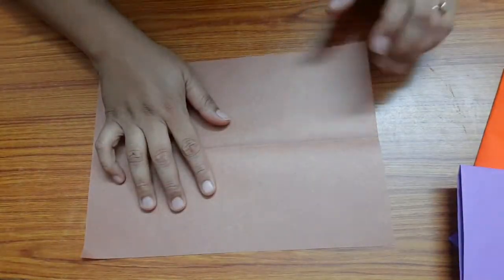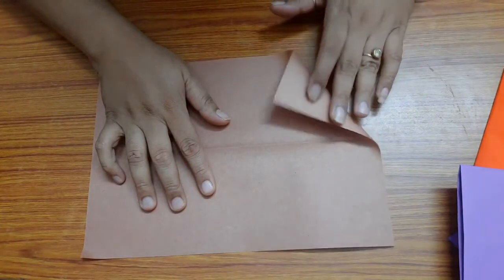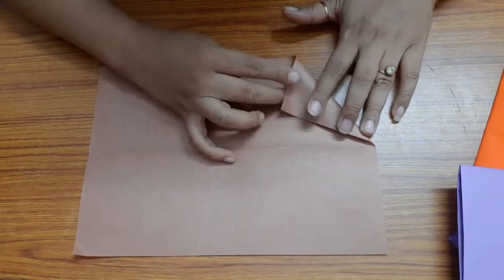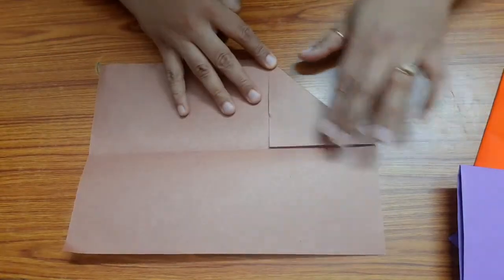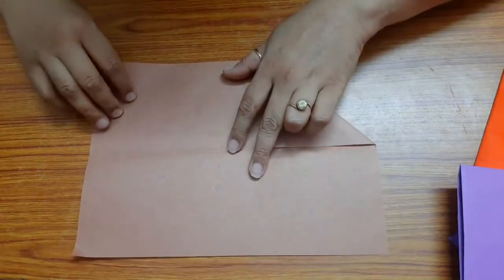Fold a triangle from here - this corner to the line at the center. Same way on the other side.